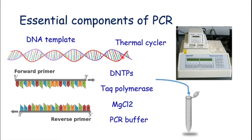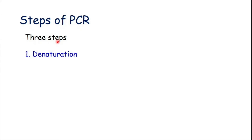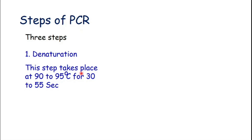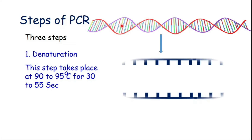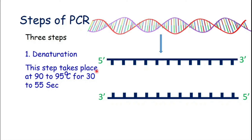In the next slide we will discuss the different steps and procedure of PCR. The first step is denaturation, which takes place at 90 to 95 degrees Celsius for 30 to 55 seconds. In this step, DNA — which is a double helix structure with both strands joined together by hydrogen bonds — undergoes breakdown of those hydrogen bonds, causing both DNA strands to become separate.